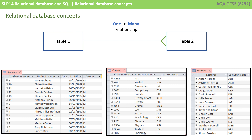For example, a single teacher in the teacher's table teaches many students in the student table. There are also what are known as many-to-many relationships — for example, a student can take many courses, but also many courses can relate to many students.